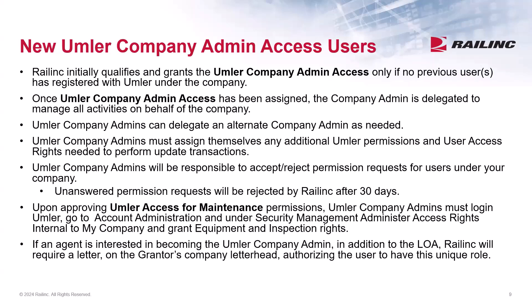When a new company joins Umler, Railinc initially qualifies and grants the Umler company admin access only if no previous users have registered with that company. Once Umler company admin access has been assigned, the admin is delegated to manage all activities on behalf of the company. They can delegate an alternate company admin as needed, and can assign themselves any additional Umler permissions and user access rights needed to perform update transactions. They are also responsible for accepting and rejecting permission requests for users under their company. Any unanswered requests will be rejected by Railinc after 30 days.